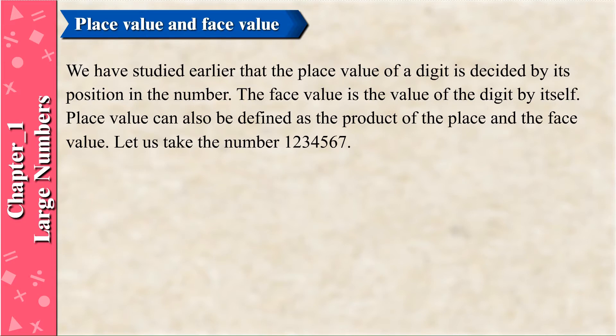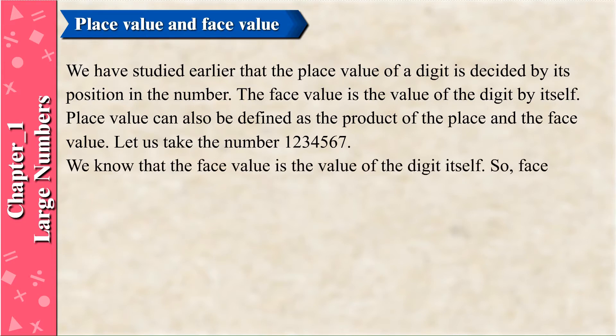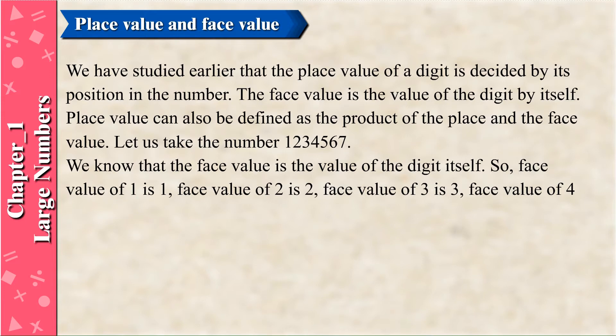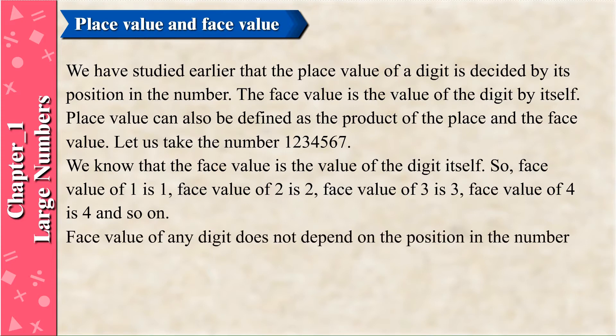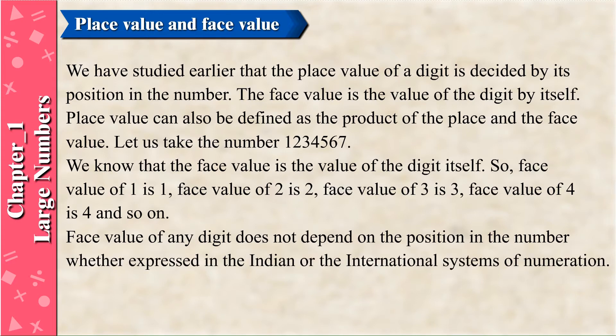Let us take the number 1,2,3,4,5,6,7. We know that the face value is the value of the digit itself. So the face value of 1 is 1, face value of 2 is 2, face value of 3 is 3, face value of 4 is 4, and so on. The face value of any digit does not depend on its position in the number, whether expressed in the Indian or the international systems of numeration.